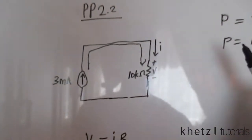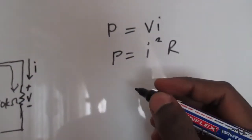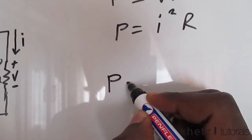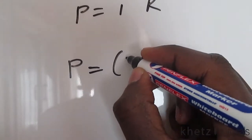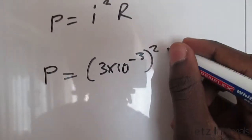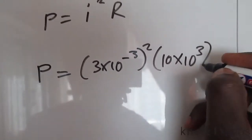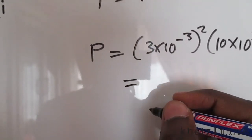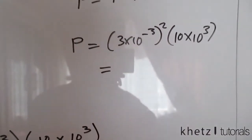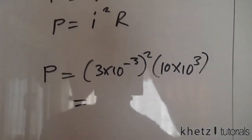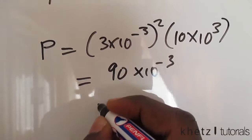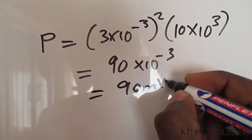Using the second formula, you'd say 3 times 10 to the minus 3 squared, multiply by the value of the resistance, which is that. And this should give you... so that cancels out and goes twice, and just simply punch that into your calculator. The value which you're going to get will be 90 times 10 to the minus 3, which equals 90 milliwatts.